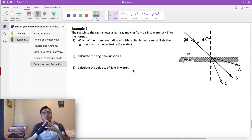Okay, it says the sketch to the right shows a light ray moving from air into water at 45 degrees to the normal. Three questions: 1) Which of the three rays indicated with capital letters is most likely the light ray that continues inside the water? 2) Calculate the angle to question 1, and 3) calculate the velocity of light in water.